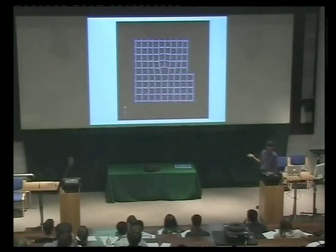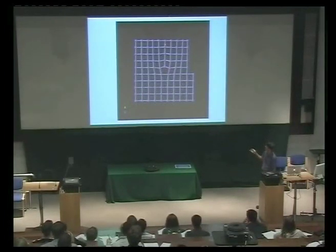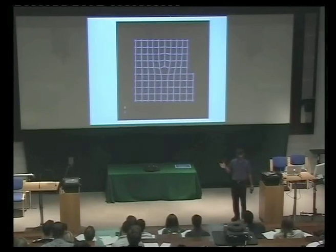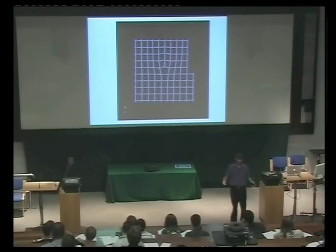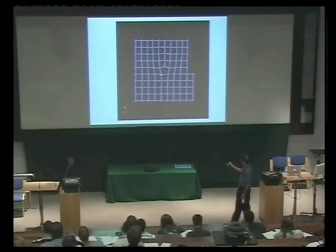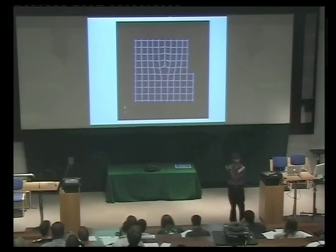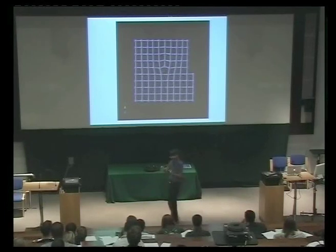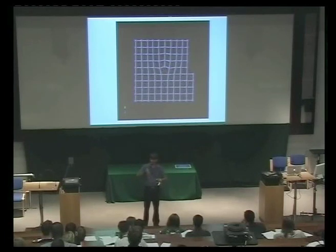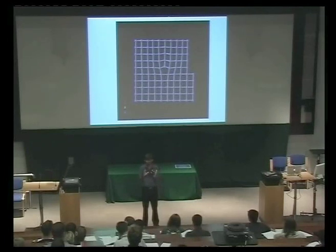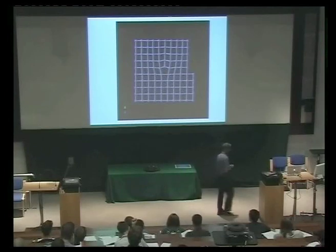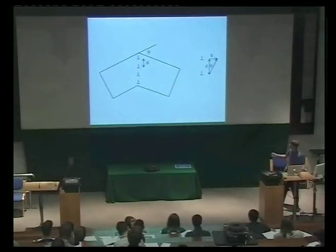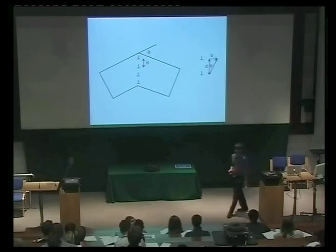This is the structure of an edge dislocation — you can see there's an extra half plane. You could create that dislocation by shoving in an extra half plane into a perfect crystal. On both sides, we've tilted the crystal. So that wedge of material is actually a dislocation that you shove in to create a bicrystal. The more dislocations you shove into the boundary, the greater will be the difference in misorientation between the two crystals.